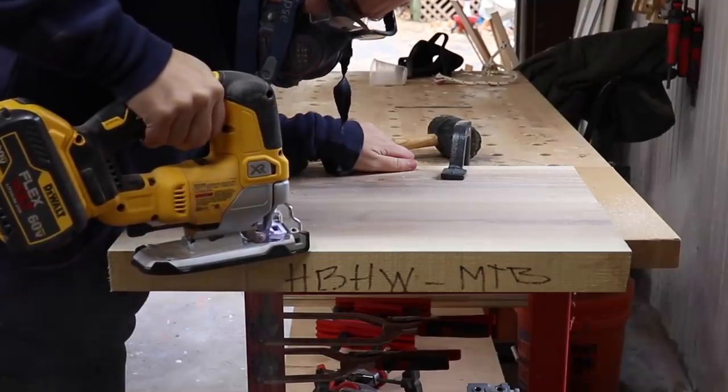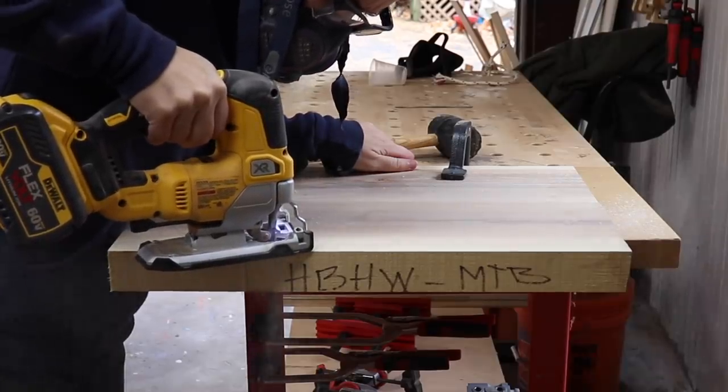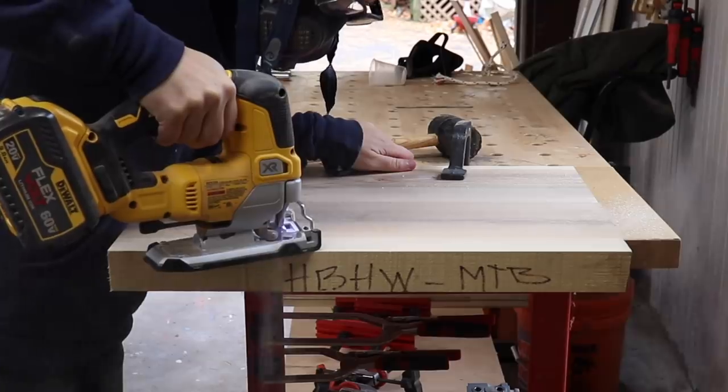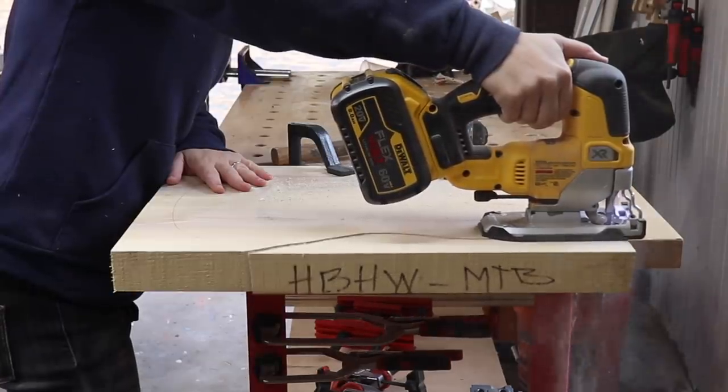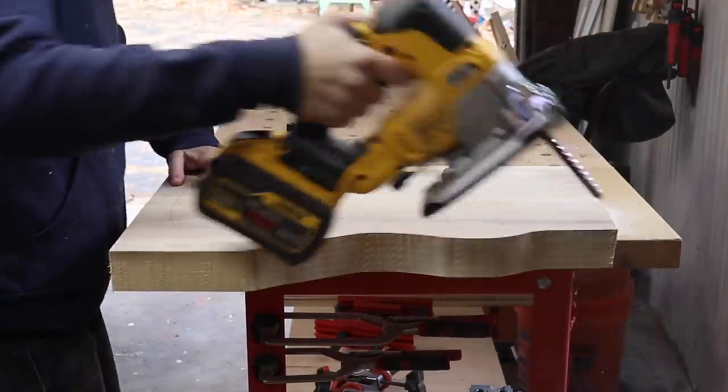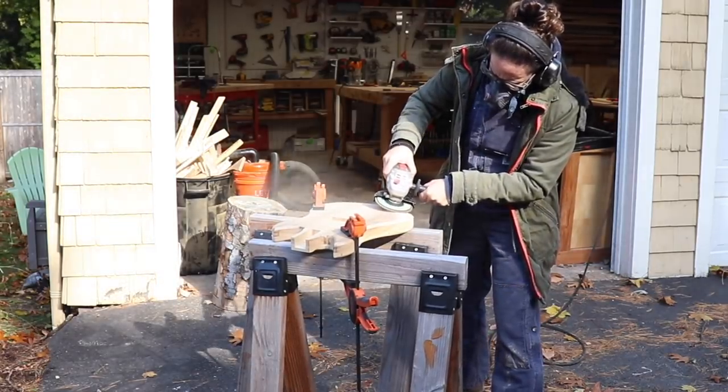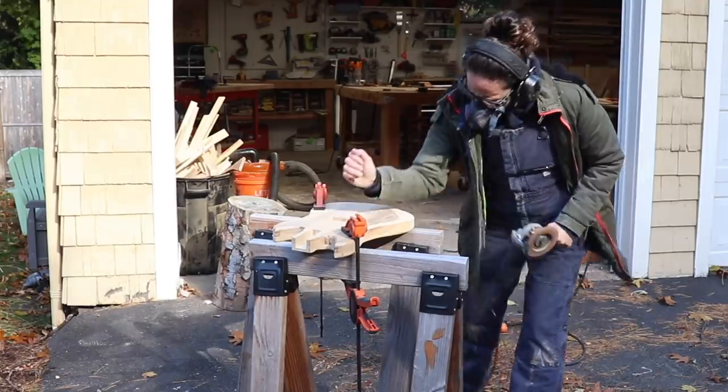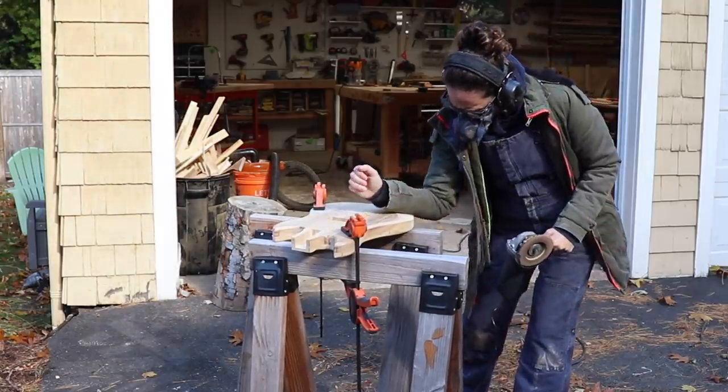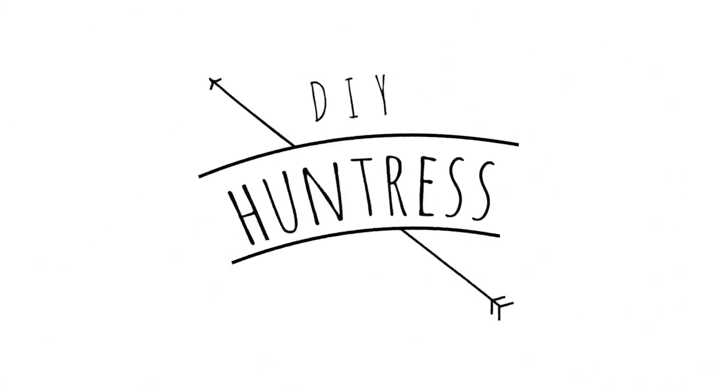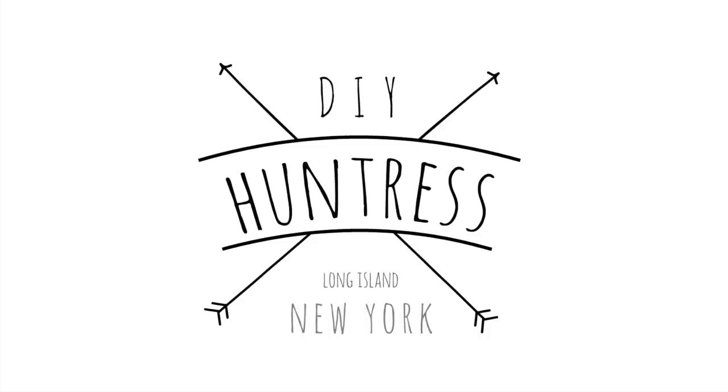Around the same time that I was learning how to do ocean pours, my friend Tamar was building her son a guitar. When she asked her son what he wanted the guitar to look like, he said the ocean. So naturally we thought about collaborating on a really awesome project where she built a guitar and I did the ocean pour on top of it. We're super excited about the way it turned out and we cannot wait to show you guys.